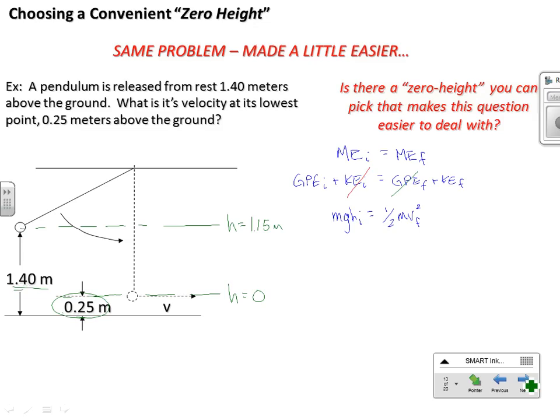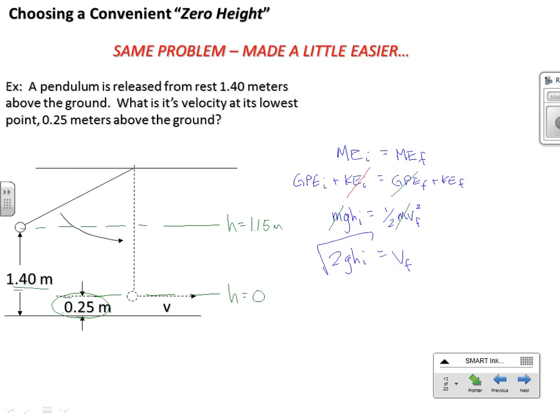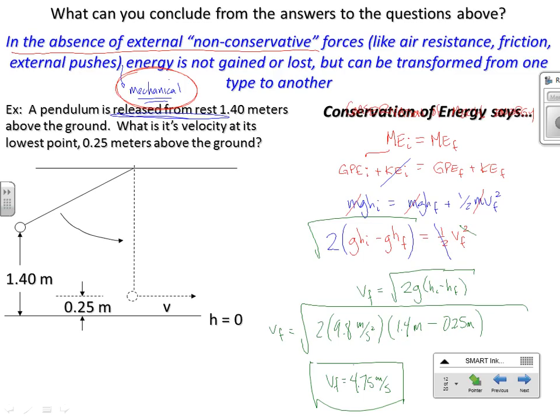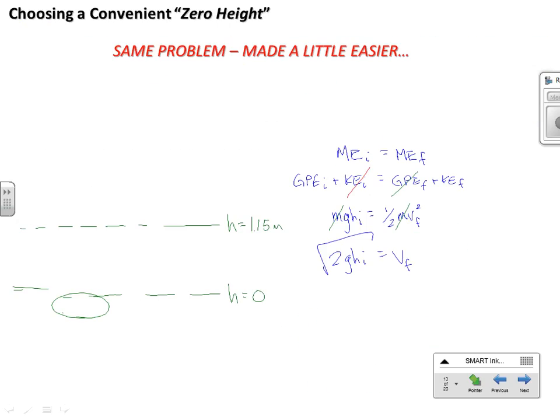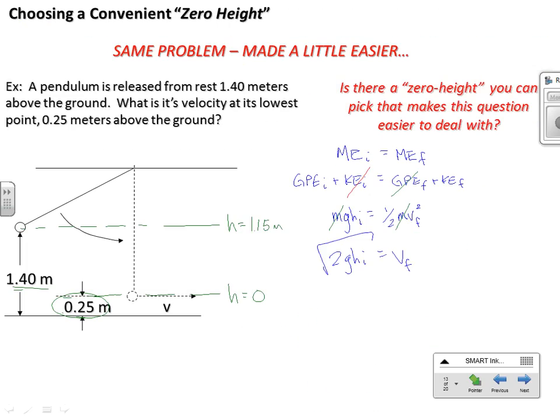Now we end up with MGH initial is one half MV final squared. We've got mass in both places. Multiply both sides by two, take the square root. We end up with the same exact solution we had before. Notice what's this? It's 1.15 meters. What's H initial now? It's 1.15 meters. 2 times 9.8 times 1.15 meters.